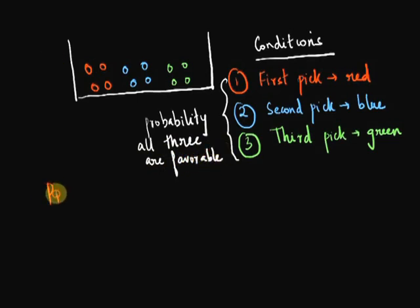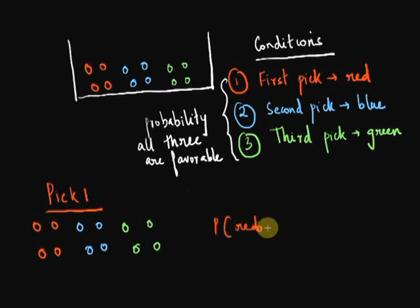We'll start with our first pick being red. During my first pick, I have four red balls, four black and four green balls in this box. So the probability of a red pick will be 4 over 12. Four red balls, 12 balls in total, which is 1 over 3.